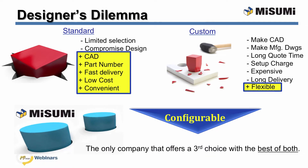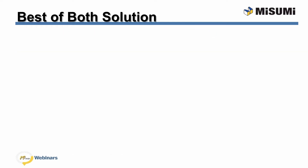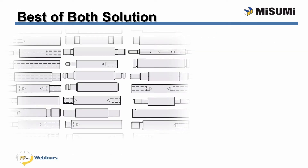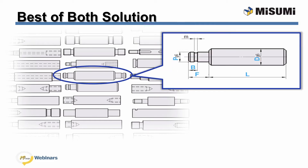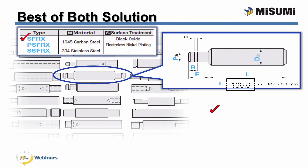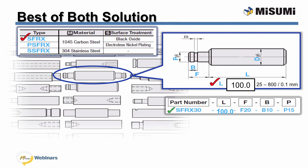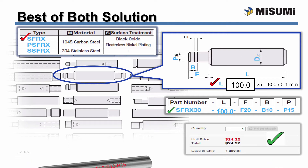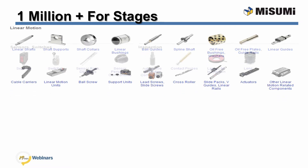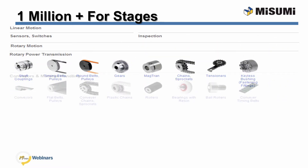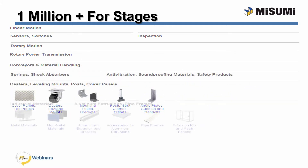Misumi offers configurable, which is the best of both — easy and flexible. Configurable components are easy to design with and purchase. Online, select the product geometry desired, the material and surface finish, and input the size for each configurable dimension within the range and increments shown. You'll get a smart part number, instant price and days to ship, and the CAD model. All of this configurability is available with our over 1 million components at MisumiUSA.com.